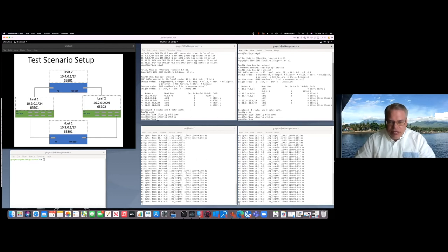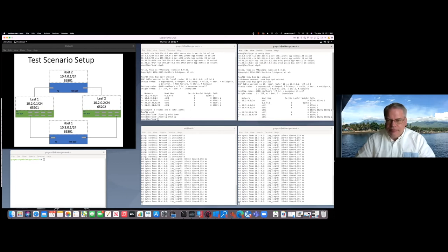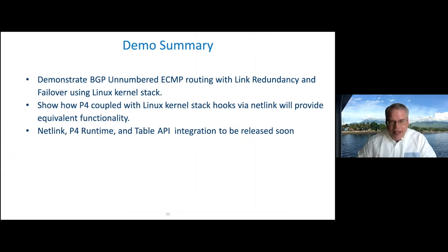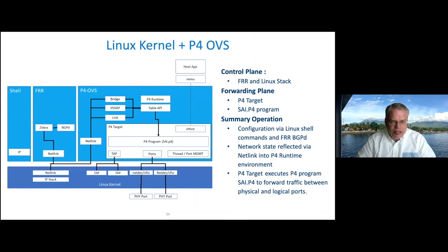We demonstrated BGP unnumbered ECMP routing with link redundancy using the Linux kernel stack. Now we want to show how P4 coupled with the Linux kernel stack hooks via Netlink will provide equivalent functionality. We'll look at Netlink, P4 runtime, and table API integration to be released that enables this capability. Within the P4OVS environment, there is a Netlink listener monitoring routing updates, bridge updates, IP and ARP configurations, and link updates — as Namrata demonstrated — and it talks into the table API. The P4 program used for this would be sci.p4.